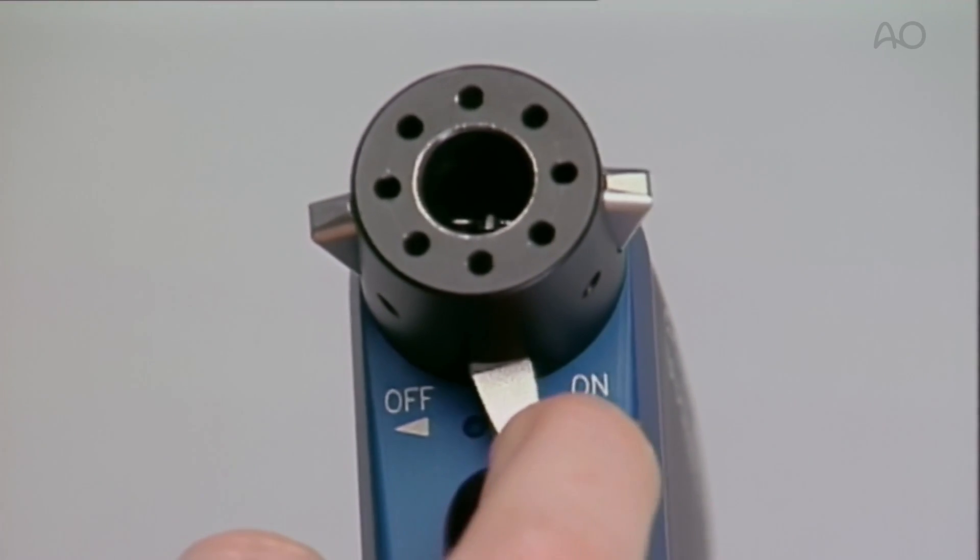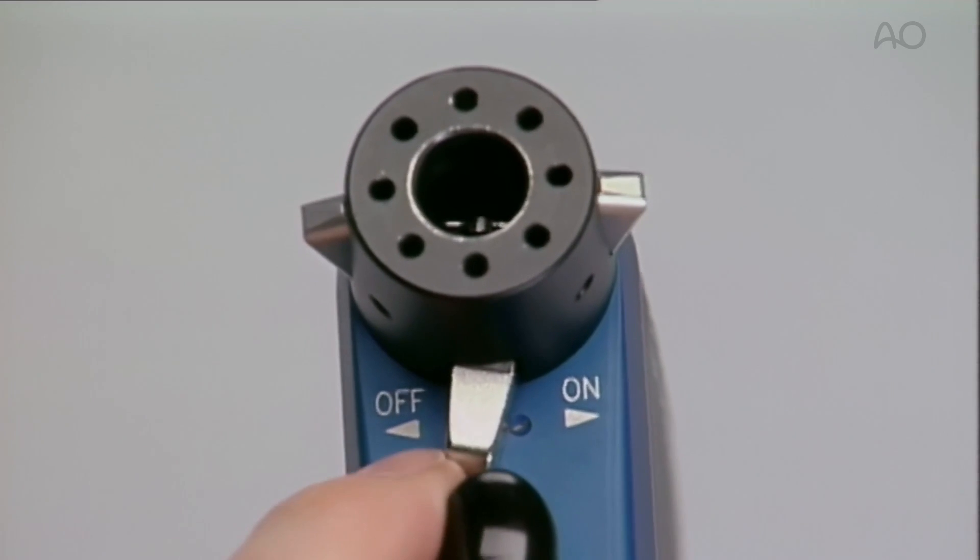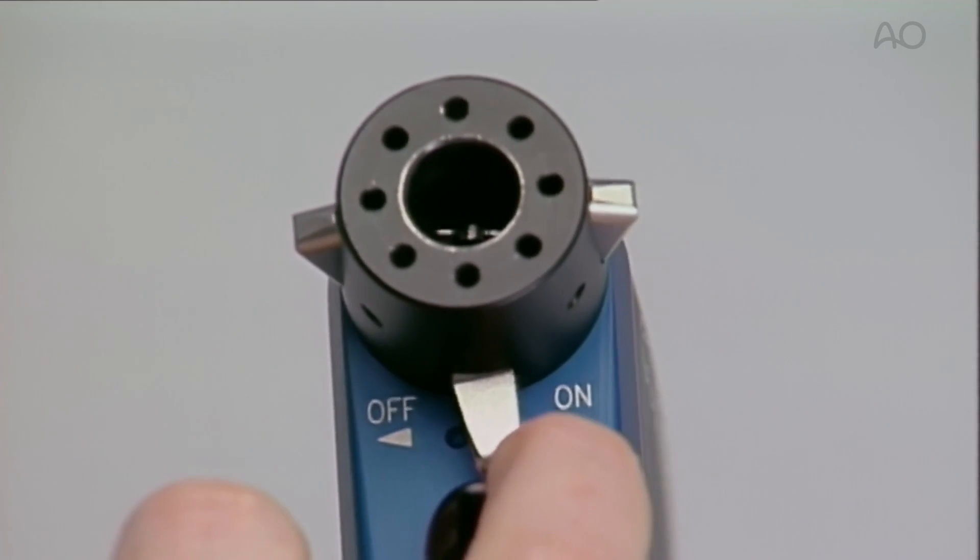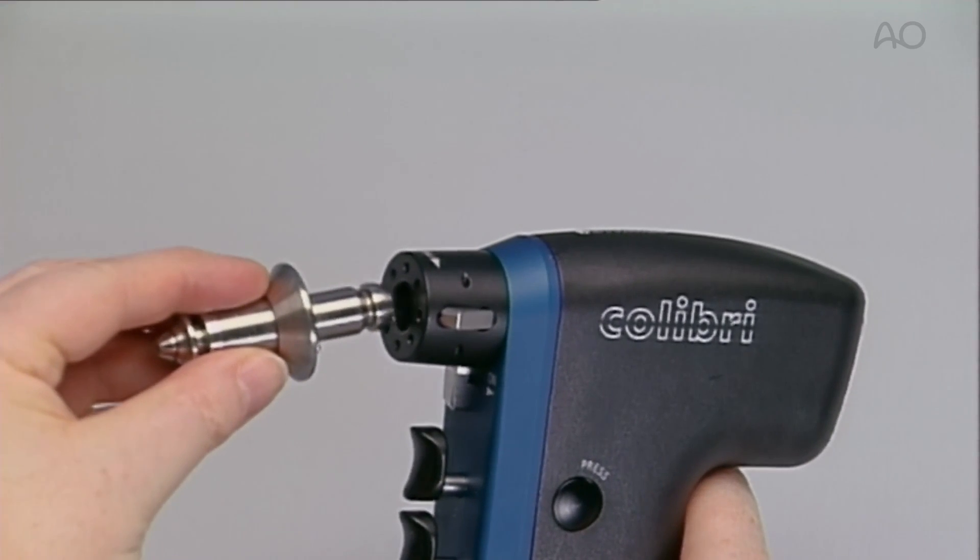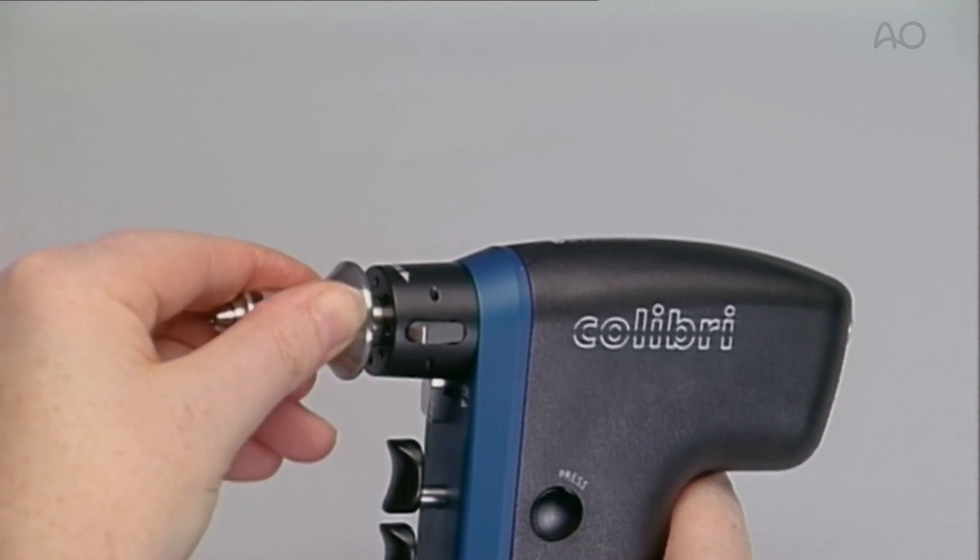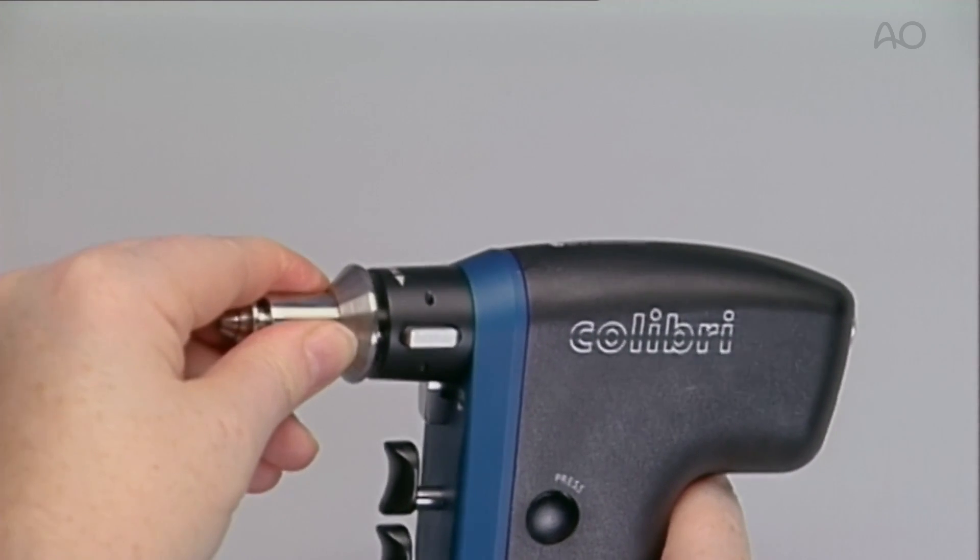The Calibri is equipped with a safety on-off switch, which should always be in the off position when changing attachments or when not in use. The appropriate attachment is inserted and rotated slightly until fully engaged.